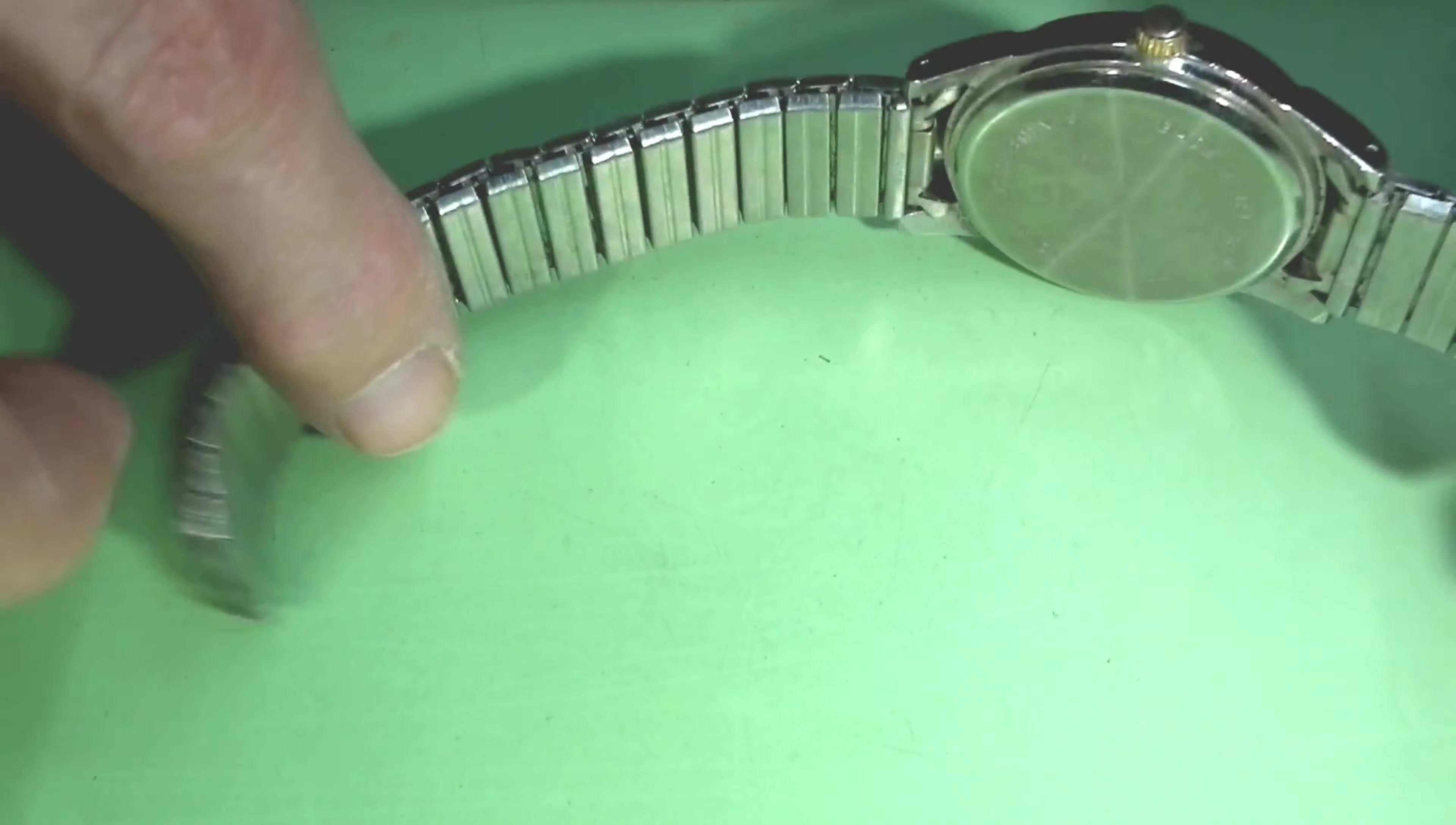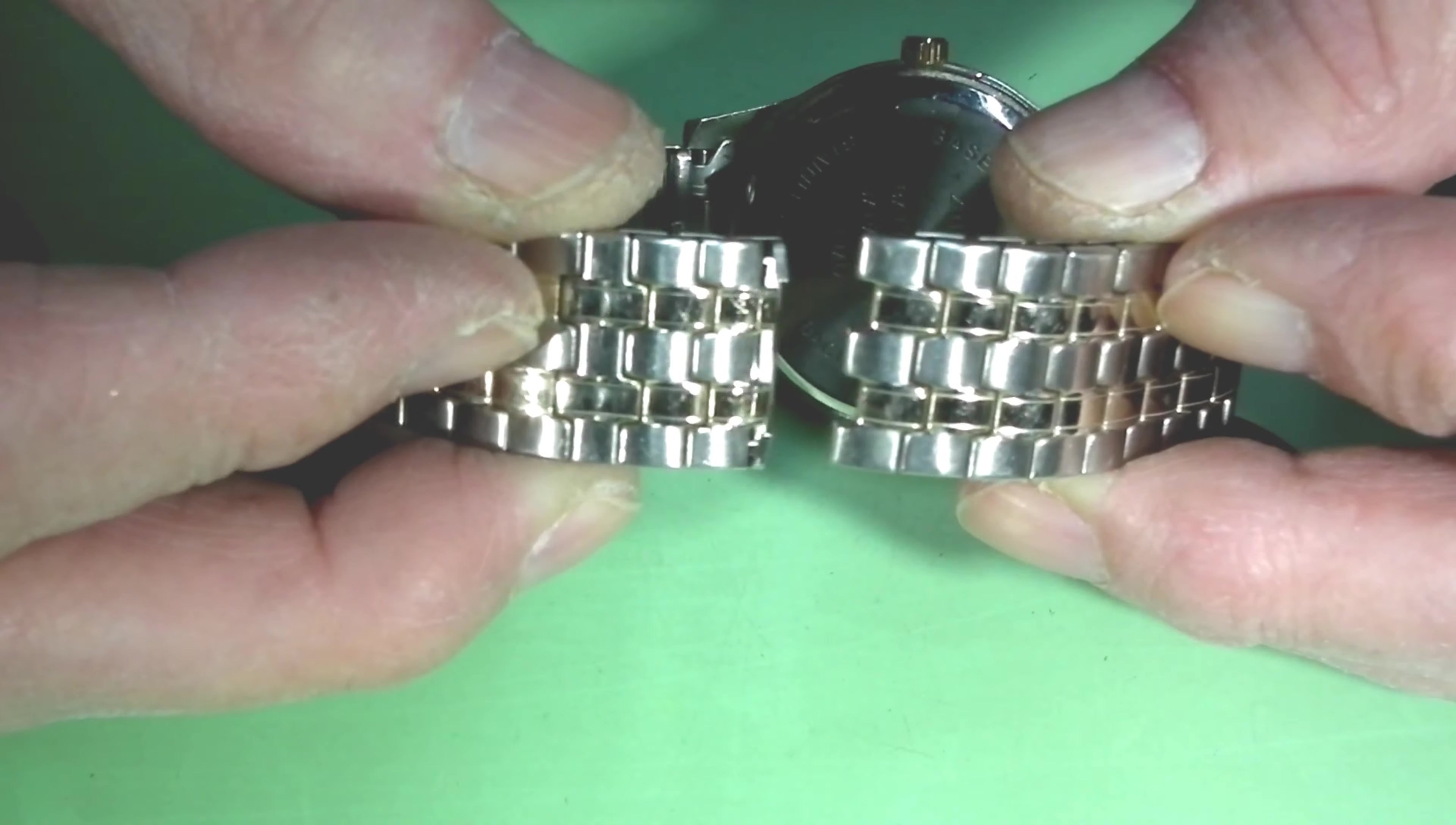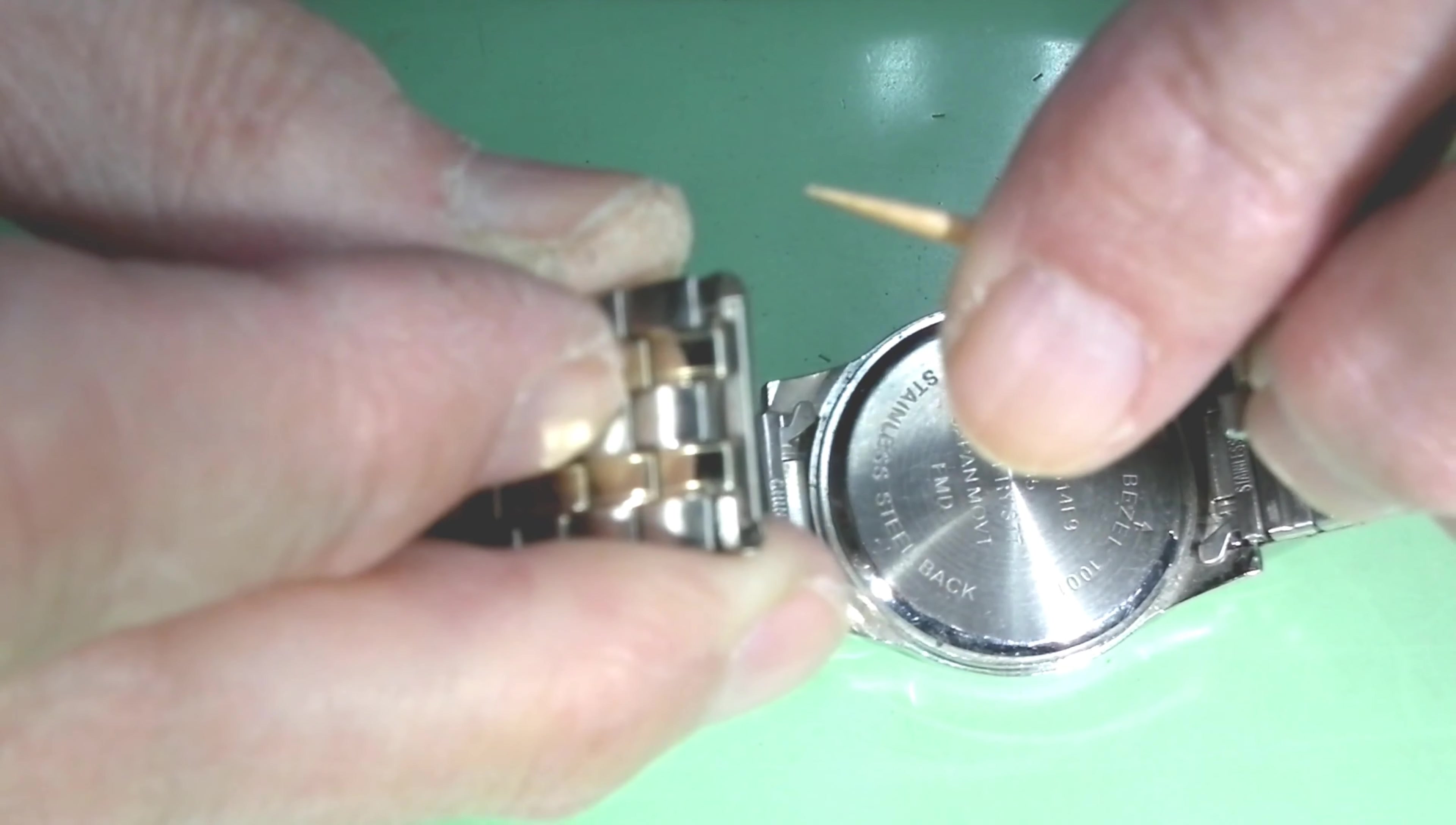In some cases they need a length adjustment, but sometimes they also get broken. In both situations they can be repaired. This watch has a broken bracelet and I'm going to show how to fix it.